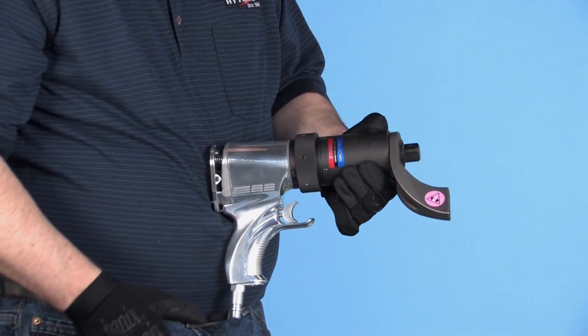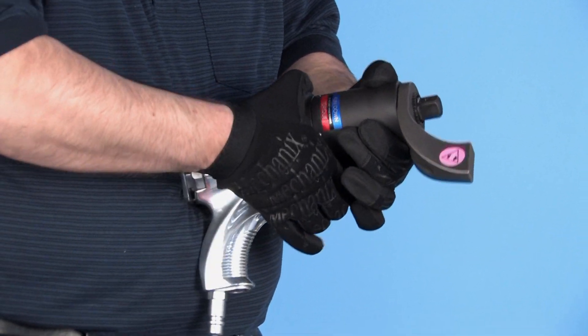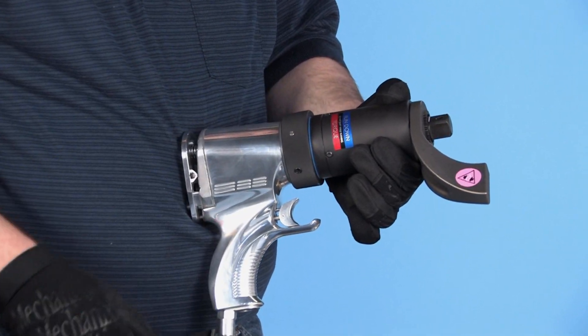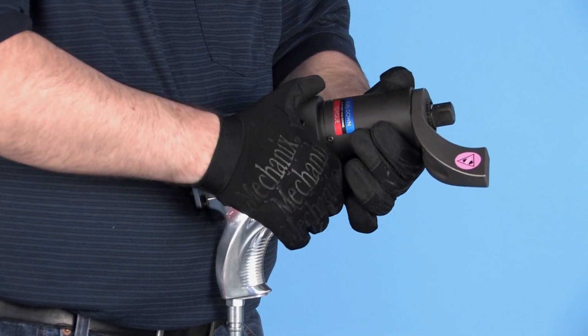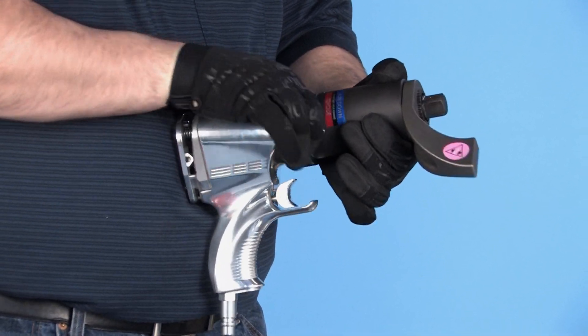The dual-speed model shifts easily from high speed for fast rundown to high power for accurate torque and back again, by rotating the speed control ring.